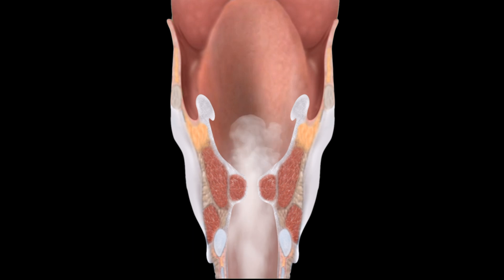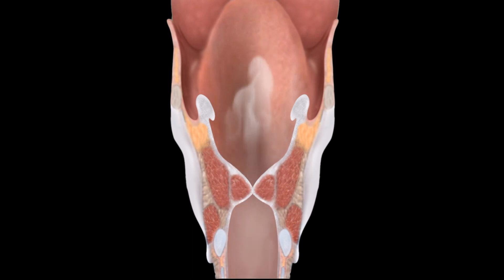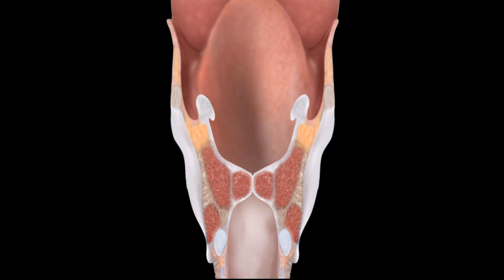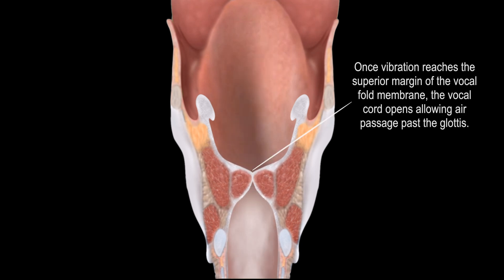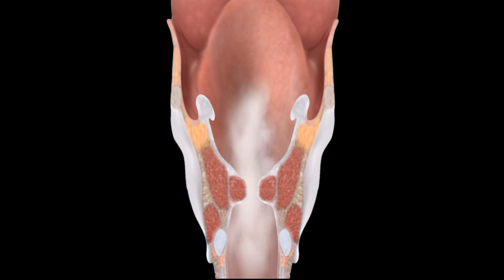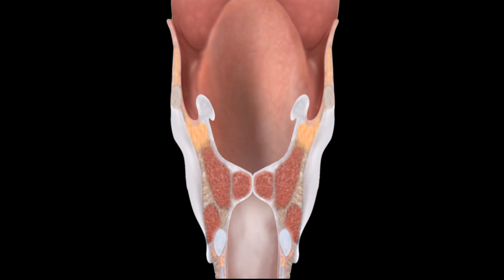The combined effect of the sustained air pressure, the elasticity of the tissue, and the coupling of the lower and upper margins contribute to the progressive opening of the vocal folds from the lower margins until the upper margins separate. At this point, air is fully released between the vocal folds on its way up towards the pharynx.